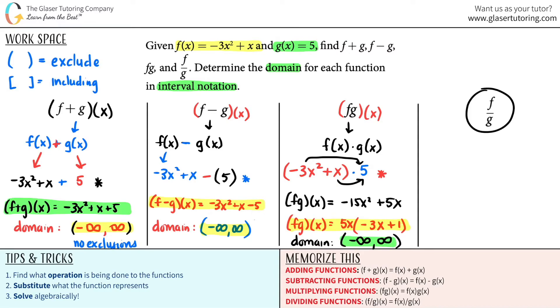Now for the next one, speaking of domain, I see that I have to divide by the g function. Once you are dividing by something, you're probably going to have exclusion values for your domain. So let's just keep that in mind as we go further.